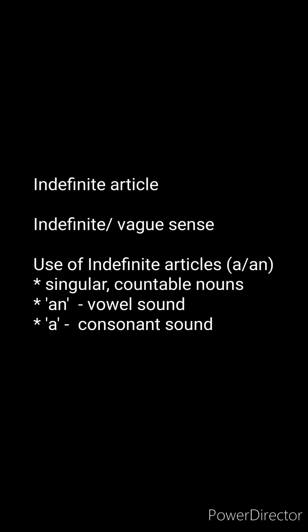Indefinite articles — 'a' or 'an' — are called indefinite articles because they leave an indefinite or vague sense about whom it is spoken. They also denote 'one.' Both 'a' and 'an' are indefinite articles and are used before countable nouns. However, there are certain rules for using 'a' and 'an' — they are associated with consonant and vowel sounds.